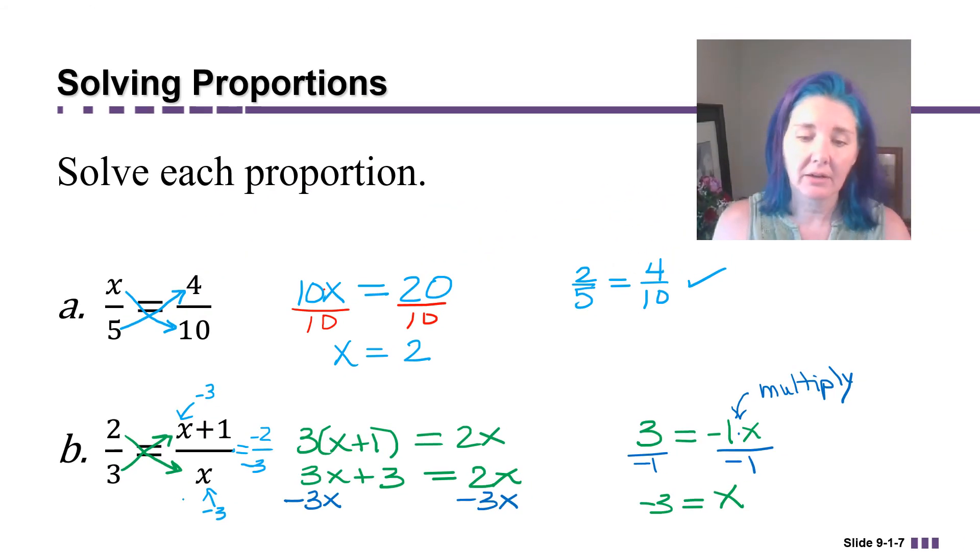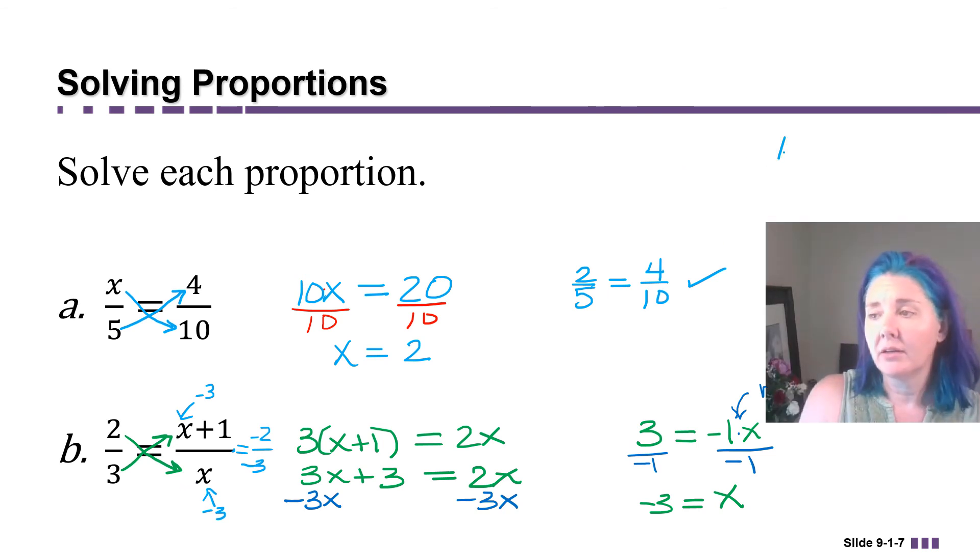All right, one thing you do have to be careful about is when you have an x in the denominator of your proportion, just make sure that whatever value you get for x does not make the denominator equal 0. Because remember, division by 0 is undefined. You can remember a number divided by 0 spells no. So just always make sure when you're solving proportions that whatever answer you get doesn't make the denominator 0. If it does, you got to throw it out. There will be no solution.